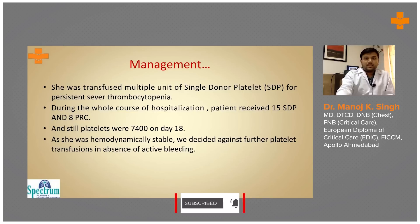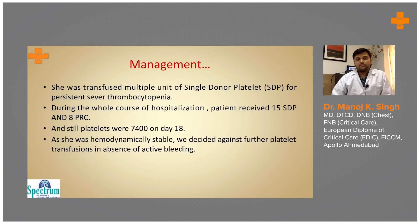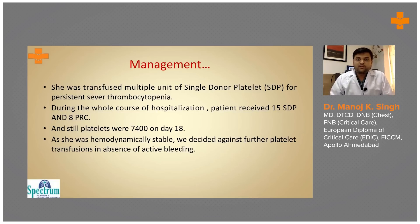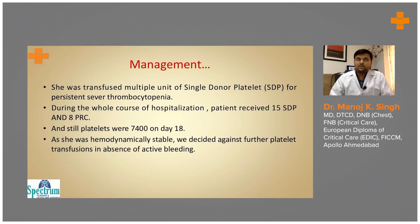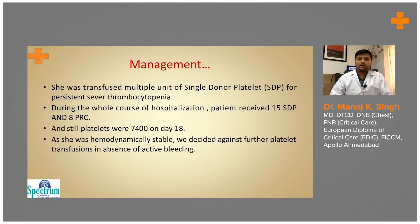She was transfused multiple units of single donor platelets for persistent severe thrombocytopenia. During the whole course of hospitalization, the patient received 15 single donor platelet units and 8 platelet concentrates. The platelet count was still 7,400 on day 18. As the patient was hemodynamically stable with no active bleeding, we increased our threshold and stopped further platelet transfusions.